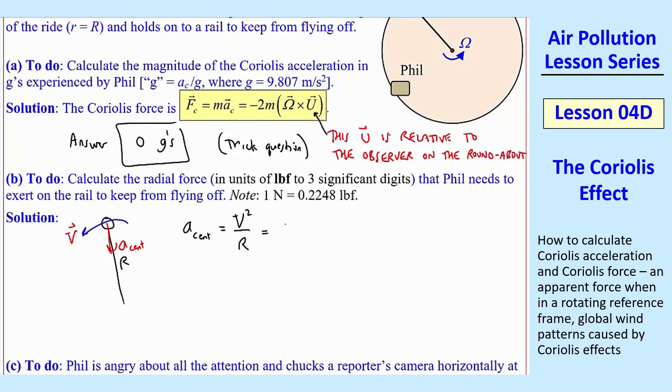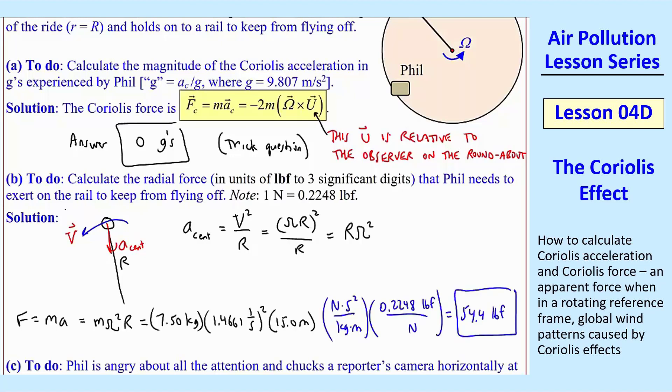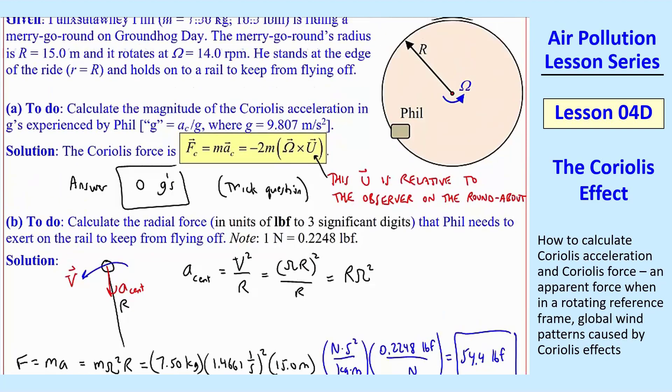So in this case, V is omega times R, since he's out at the edge, squared over R, or R omega squared. So F is mass times acceleration. And so we have an equation for this centripetal force, or what Phil experiences as a centrifugal force. He feels like he's being flung to the outside. He's holding on the rail, and the rail has to be pulling him to the inside. So that's the centripetal force, which is M omega squared R, just plugging this in. And I plug in the mass.